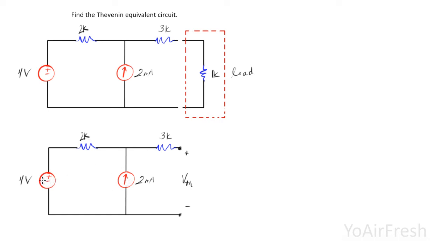combine the two current sources, and then we can change the current source and the one parallel resistor back into a voltage and a series resistor. So I'll go ahead and do that.